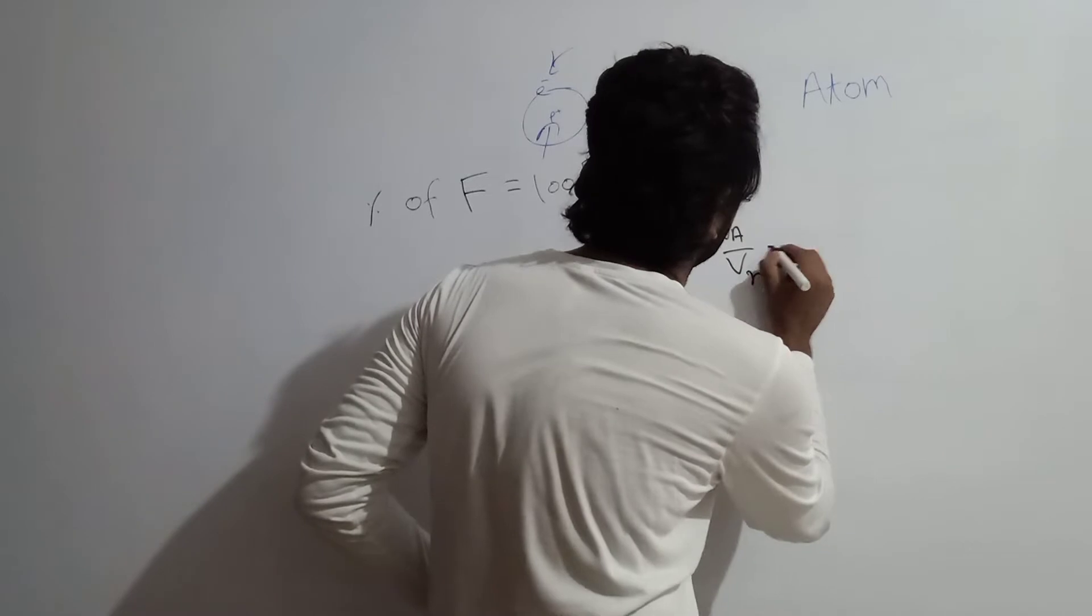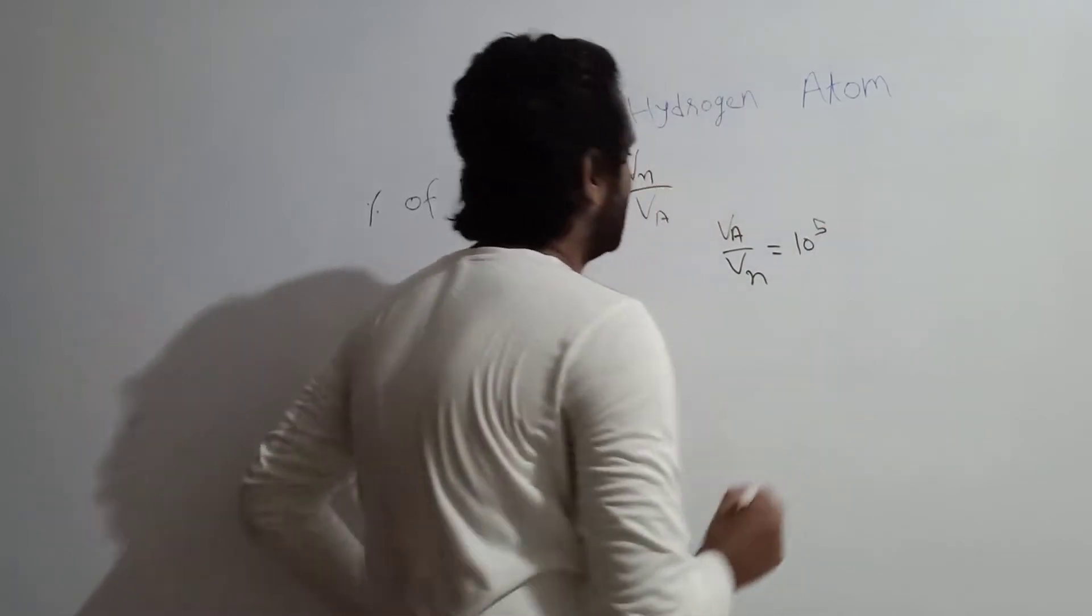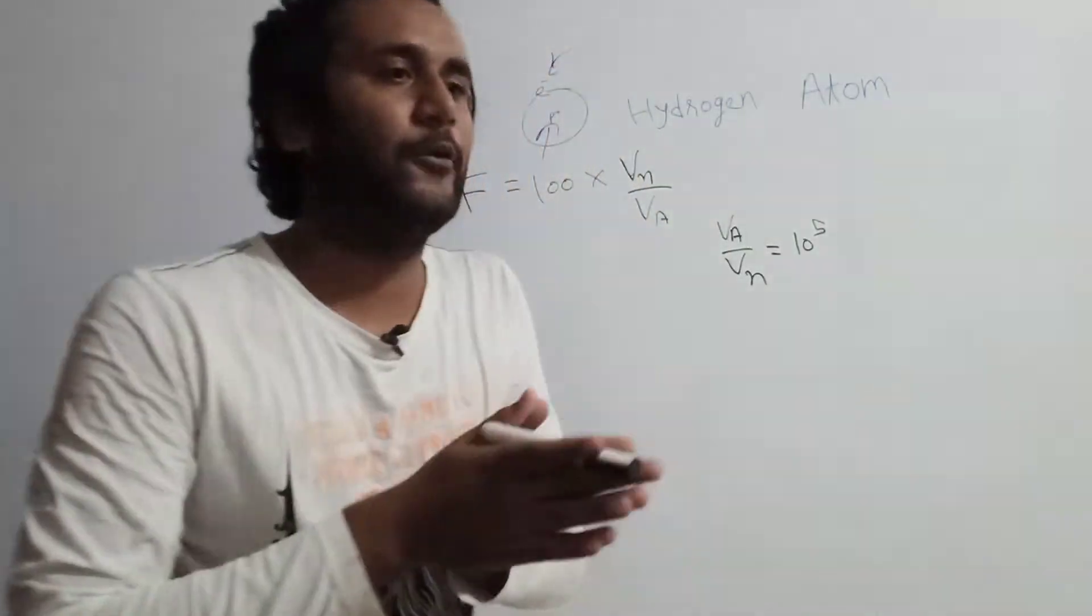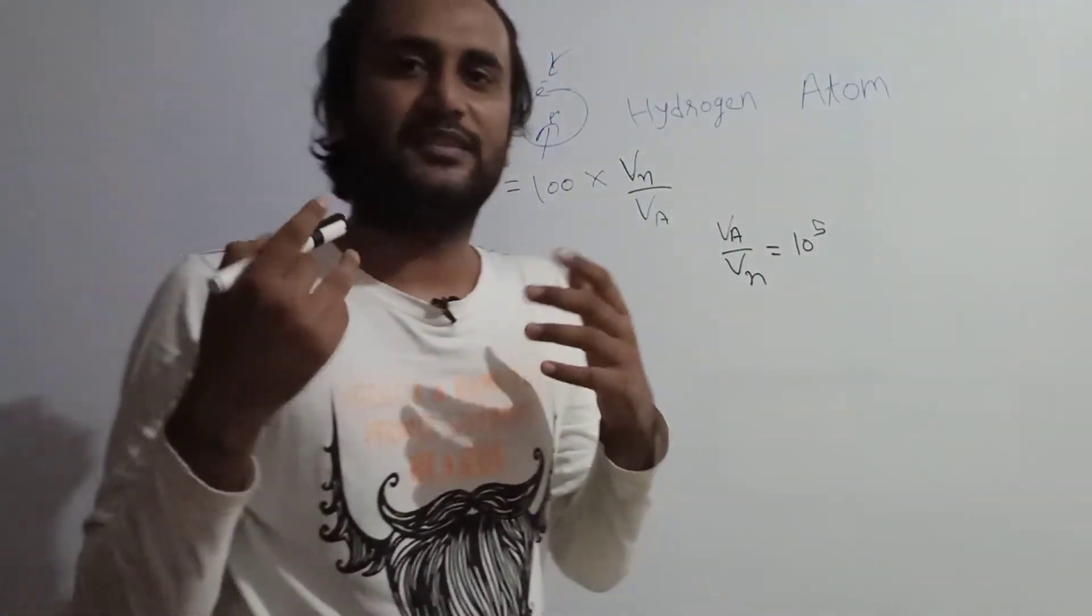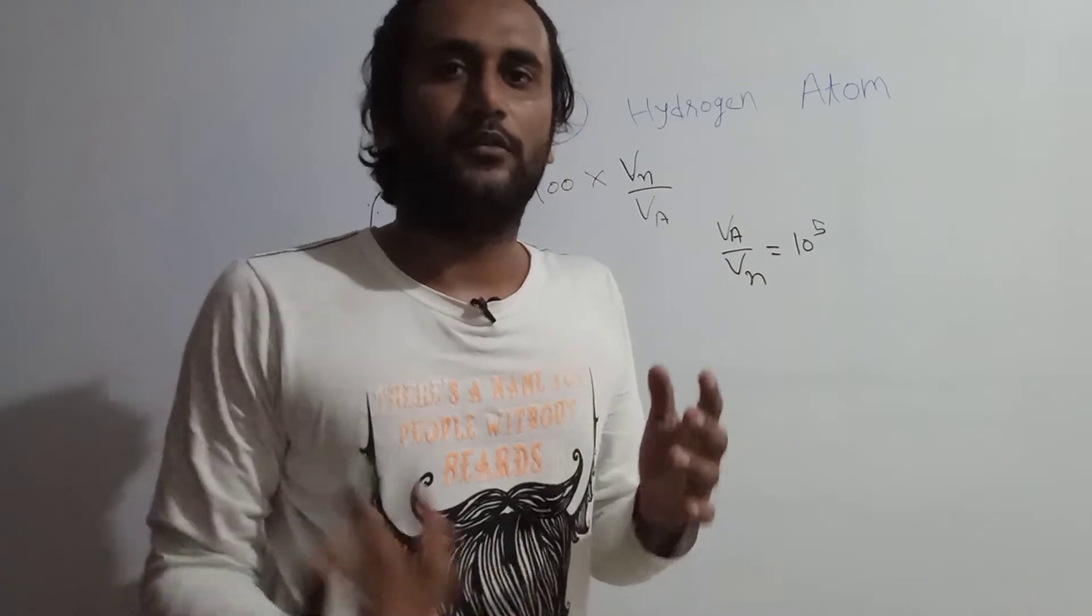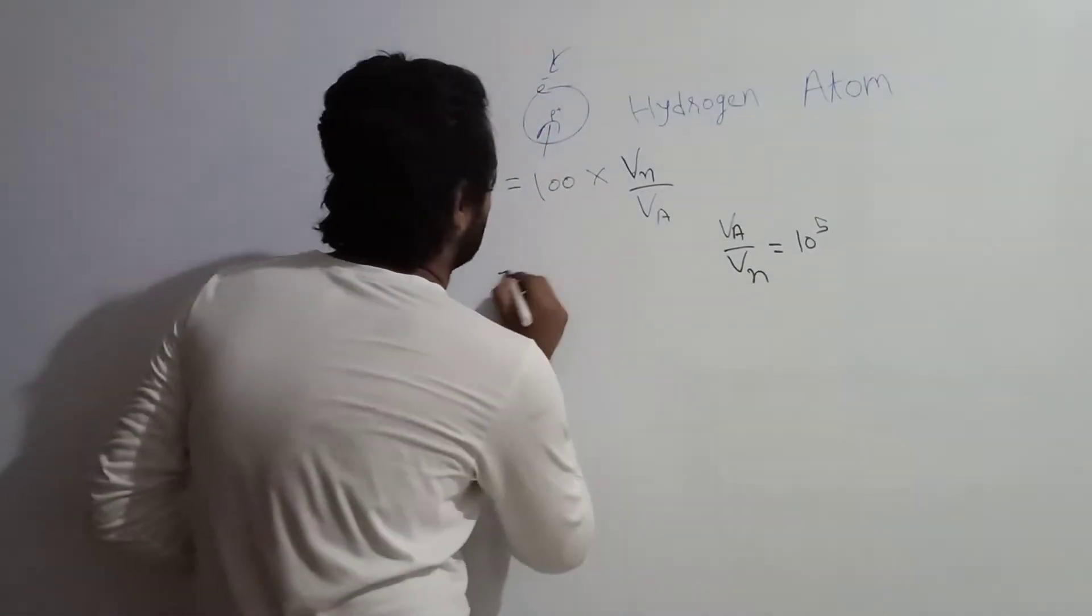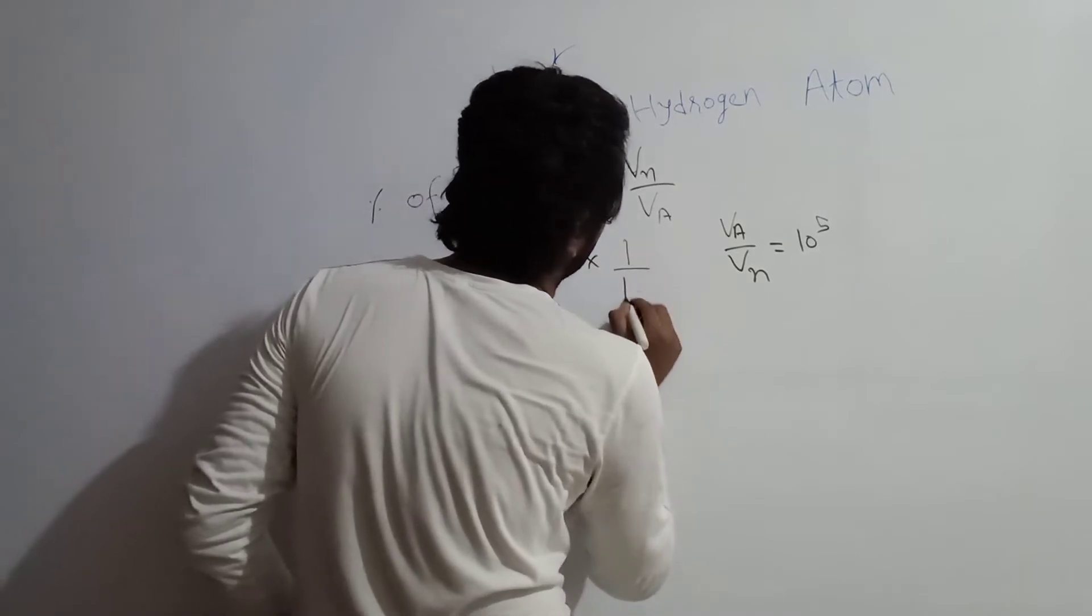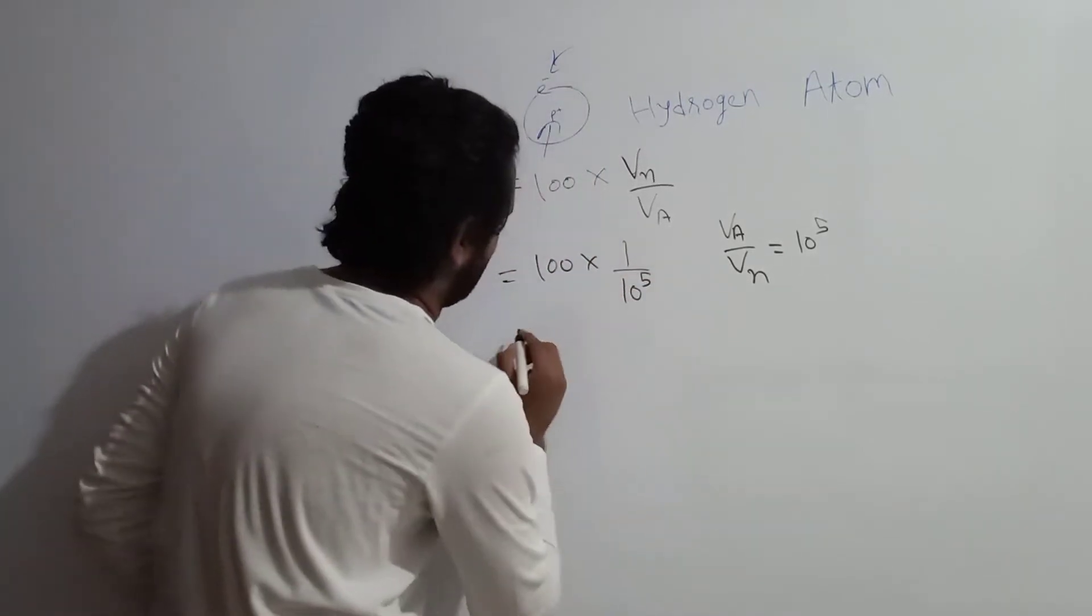So we can say that the atom is 10^5 times bigger than the size of nucleus. Let us calculate then: 100 into 1 by 10^5 is equal to 0.001.